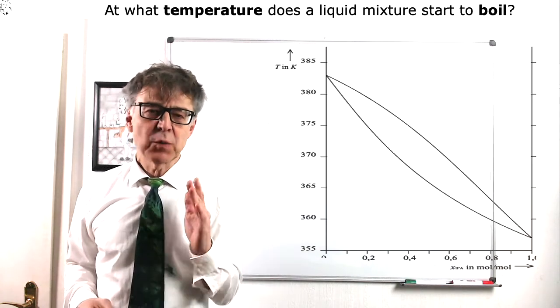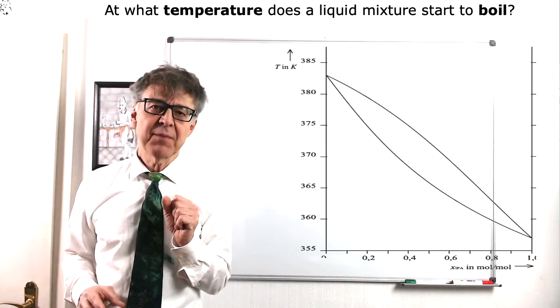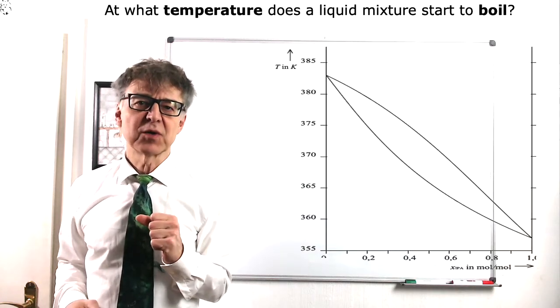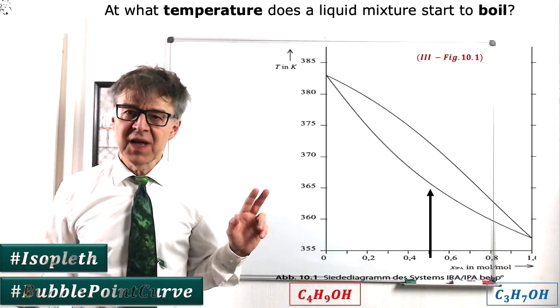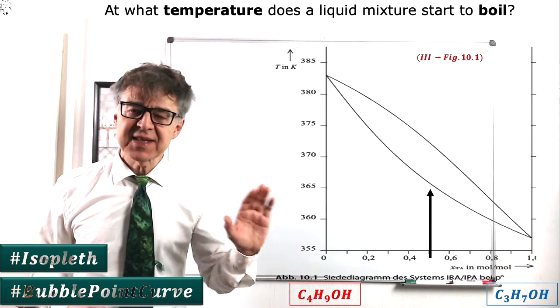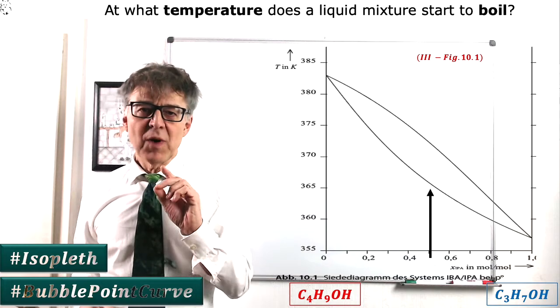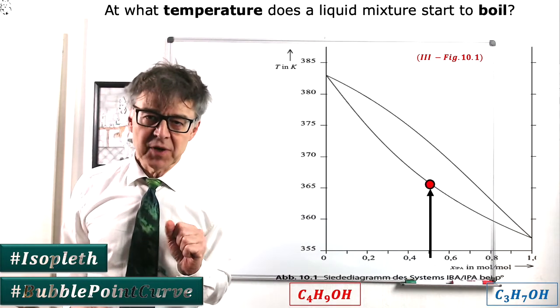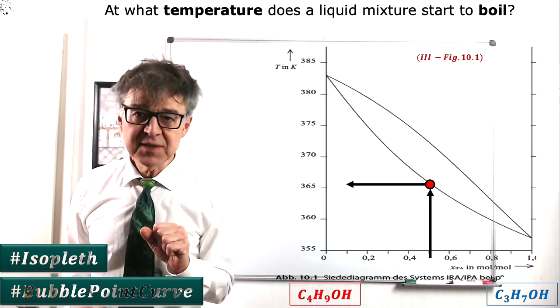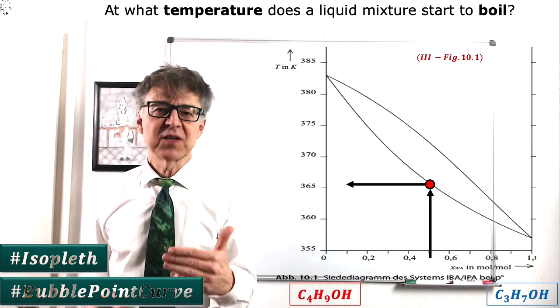First question: at what temperature will the aforementioned 50-50 IBA-IPA mixture start to boil? To answer this, we draw a so-called isopleth, a line on which the composition of the mixture is constant at x equals 0.5 into the diagram, and see where this line intersects with the boiling point curve. The intersection is at 365 K. This is obviously the temperature at which the mixture will start to boil.